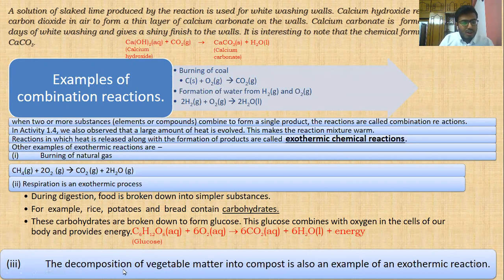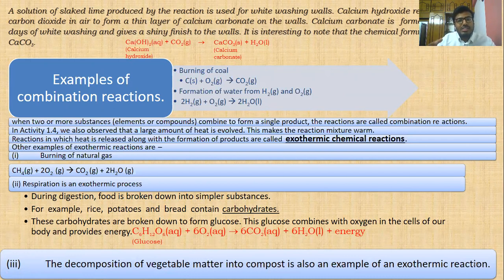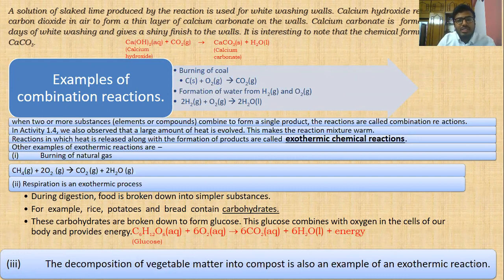The third example of an exothermic reaction is the decomposition of vegetable matter in compost — vermicompost. When we fill matter in the compost, heat comes out, and the gas produced can be used for cooking in rural areas. So, in a combination reaction we have two reactants and one product. In an exothermic reaction, heat comes out of the system.